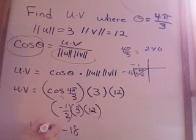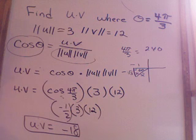So, the dot product of u·v is negative 18. Hey, that's easy. You can do that. Good luck.